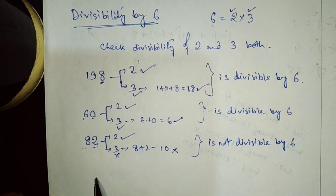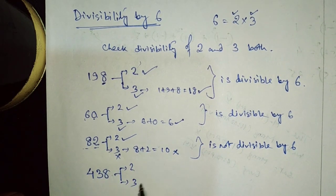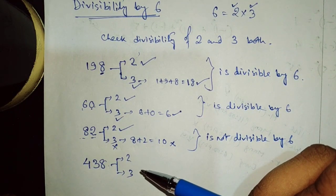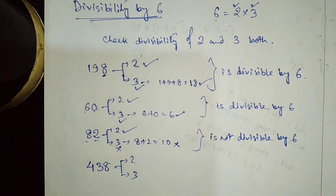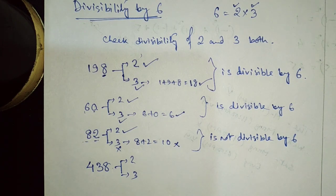Let us take another example: 438. You try this one. Check whether it is divisible by both 2 and 3. After watching this video, answer in the WhatsApp group whether 438 is divisible by 6 or not. All the divisibility rules we have learned today, I will give you in written form. You just have to study them properly and memorize them. Thank you.